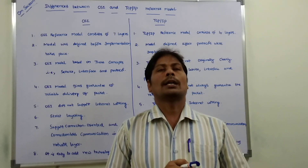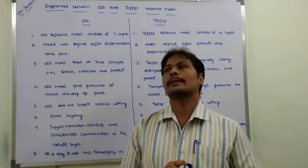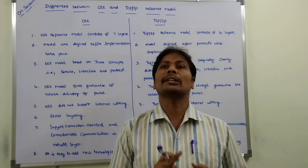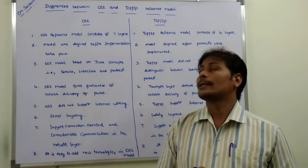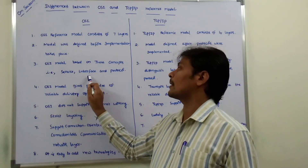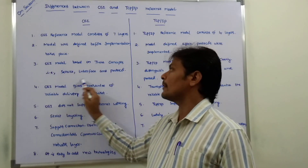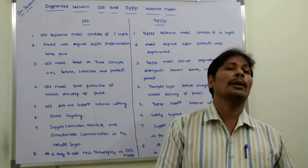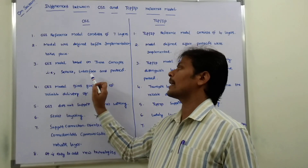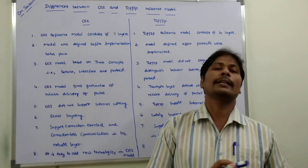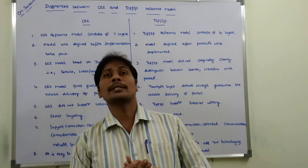The third difference: the OSI reference model consists of mainly three components — one is service, second one is interface, and third one is protocol. The OSI reference model is based mainly on these three components: service, interface, and protocol.